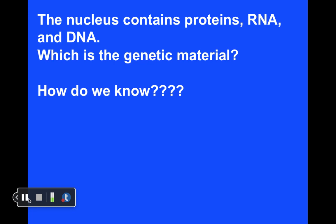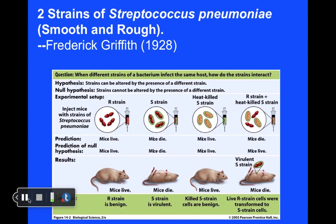For quite a while, people knew that the nucleus contained proteins, RNA, and DNA. And the question was: what is the genetic material? They also knew for a while that the nucleus contained the genetic material based on earlier experiments. Of course, we now know that DNA is the genetic material, but how do we know? What experiments led to that ultimate conclusion?